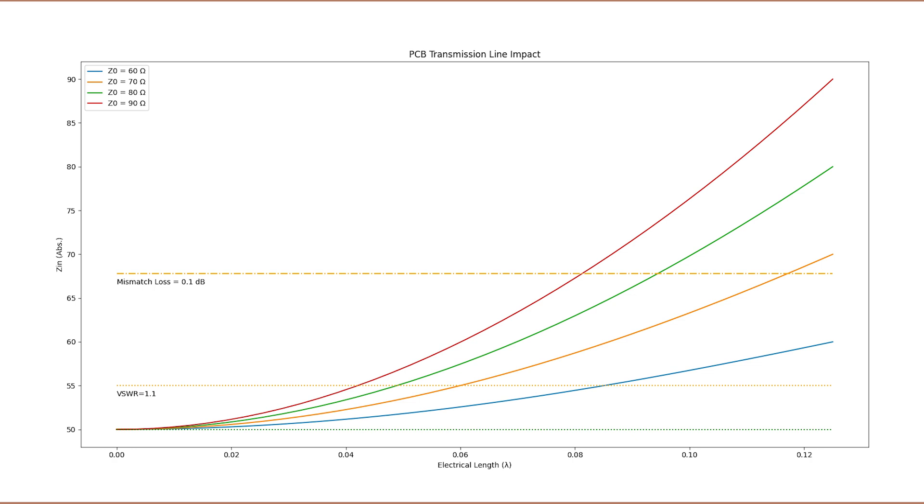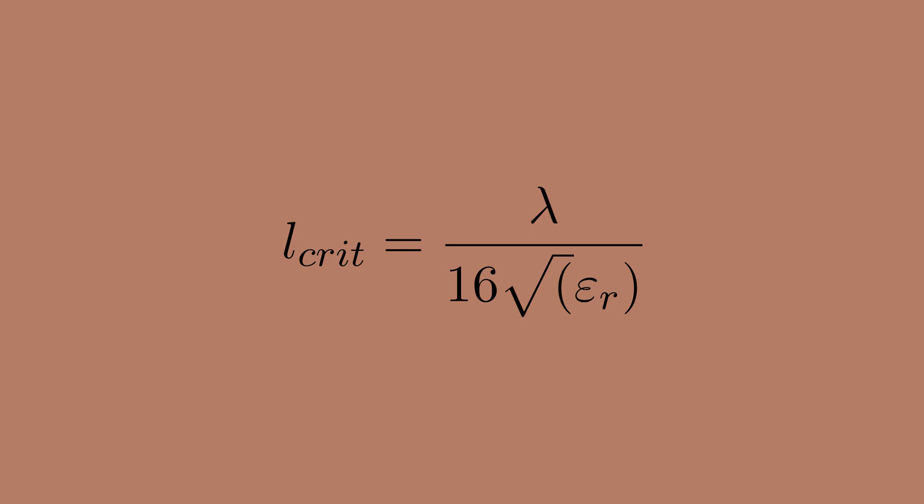However, within the constraint of the PCB trace's impedance not exceeding 110 ohms, a one sixteenth of a wavelength rule of thumb reliably keeps the resulting mismatch loss below 0.1 dB.